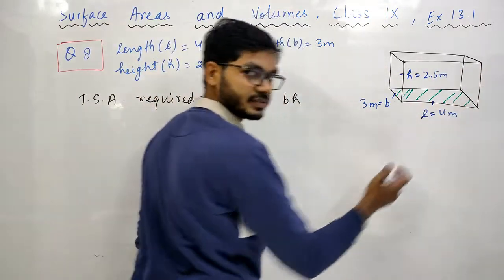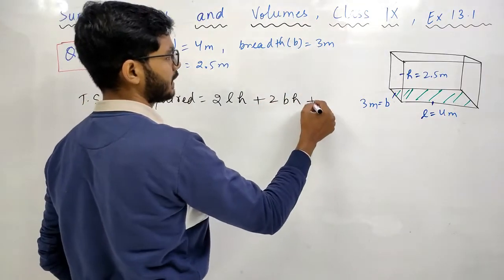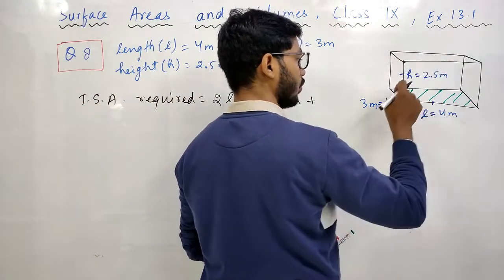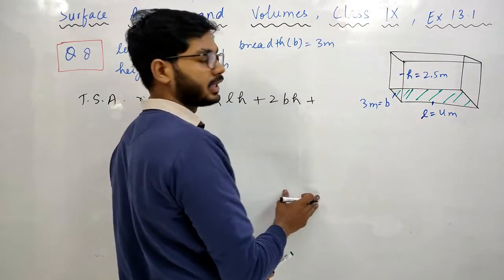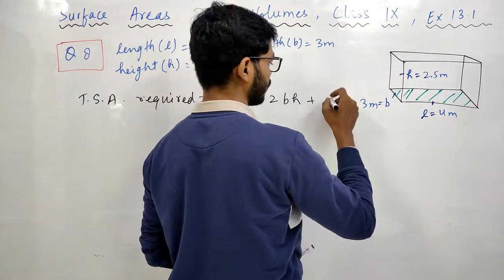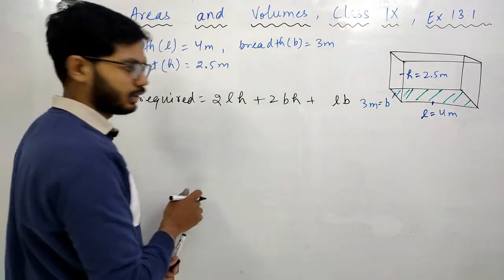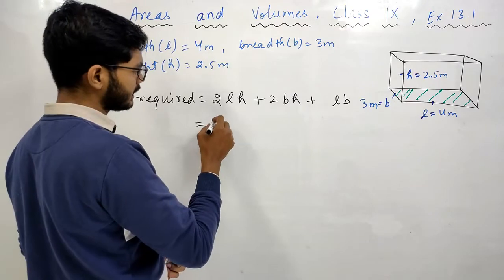Plus, you don't need the base, but you need the top which is just like the base, meaning its area will be L into B. So the top area is L into B. Now let's calculate the area.